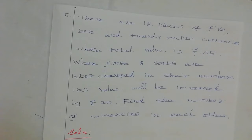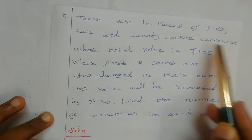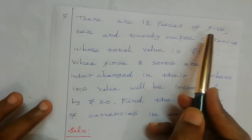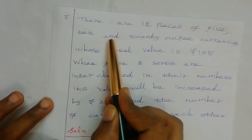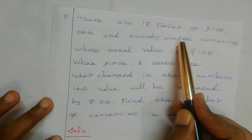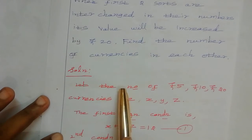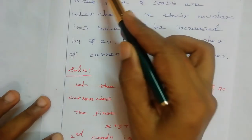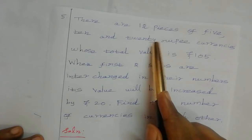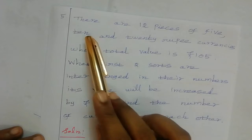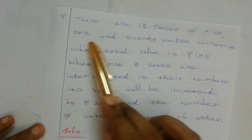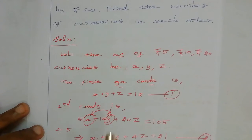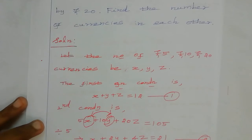Now go to the fifth problem. The question is: there are 12 pieces of 5, 10, and 20 rupee currencies — so totally 12 pieces of currencies. We assume the number of 5 rupee currency is x, number of 10 rupee currency is y, and number of 20 rupee currency is z. The first condition is x plus y plus z equal to 12. Let us take this as equation number one.